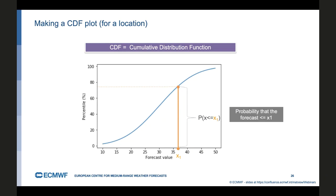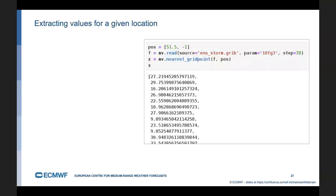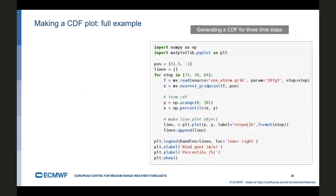To do this, we need to extract the values at the given point from the forecast. We can do it in this way. First we define the position. This is roughly the location of Reading. We then read in the data for a given timestamp for the wind gust forecast and then call Metview's nearest_gridpoint function for this position which will return us a numpy array in the Jupyter notebook and this array will contain 51 values because we've taken one value from each field.